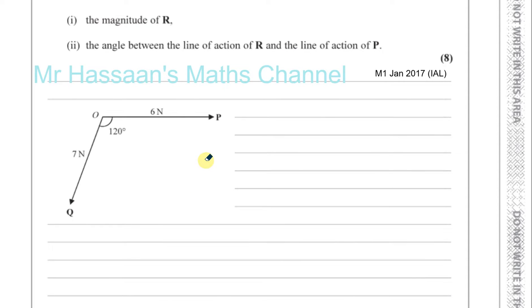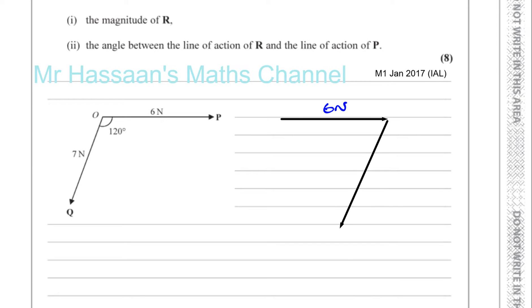What I'm going to do is draw a triangle of forces. When there are only two forces involved, this is probably the easiest way of dealing with this question. I'm going to draw my force P going in this direction with magnitude 6 newtons, and then from where P ends, I'm going to draw Q — 7 newtons going in this direction, a bit longer than the first one.